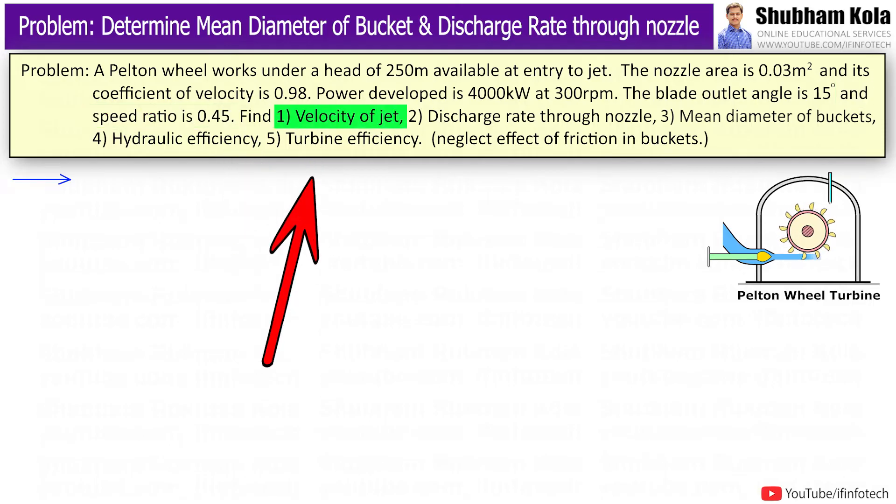Find velocity of jet, discharge rate through nozzle, mean diameter of bucket, hydraulic efficiency and turbine efficiency. Neglect effect of friction in buckets.